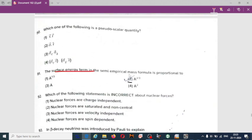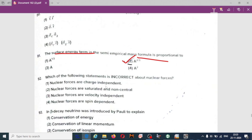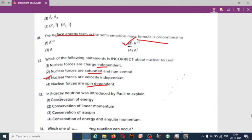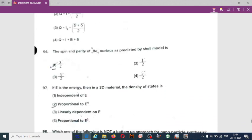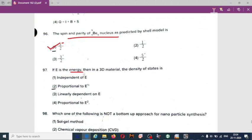The surface energy term in the semi-empirical mass formula is proportional to A to the power 2/3. Which of the following statement is incorrect about nuclear forces? The spin and parity of beryllium in the shell model is 3/2 odd parity, 3/2 minus. If E is the energy, then in 3D material the density of states is proportional to root of the energy, option 2.